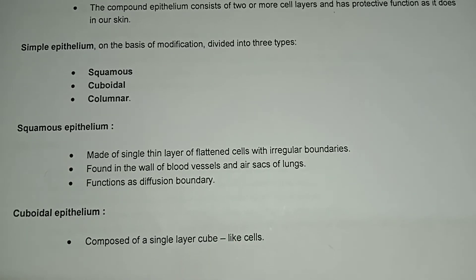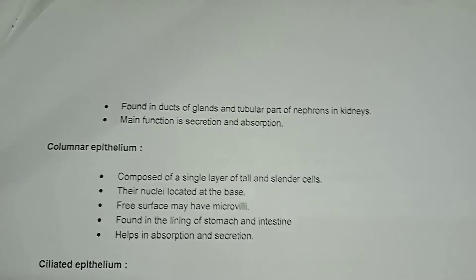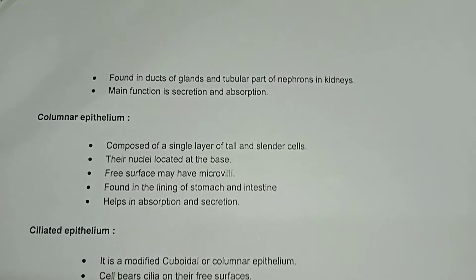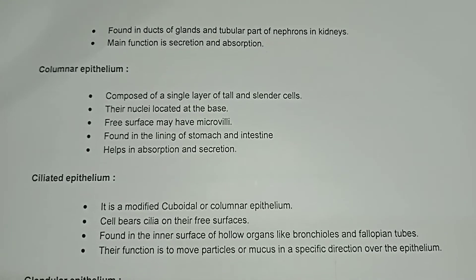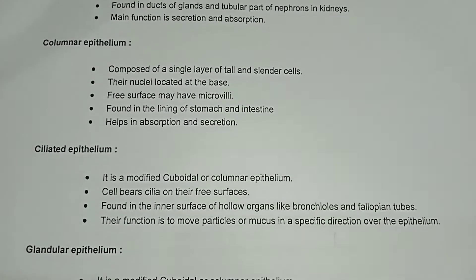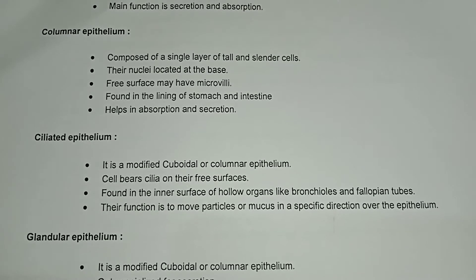Cuboidal epithelium is composed of a single layer of cube-like cells, found in ducts of glands and tubular parts of nephrons in the kidney. Its main function is secretion and absorption.